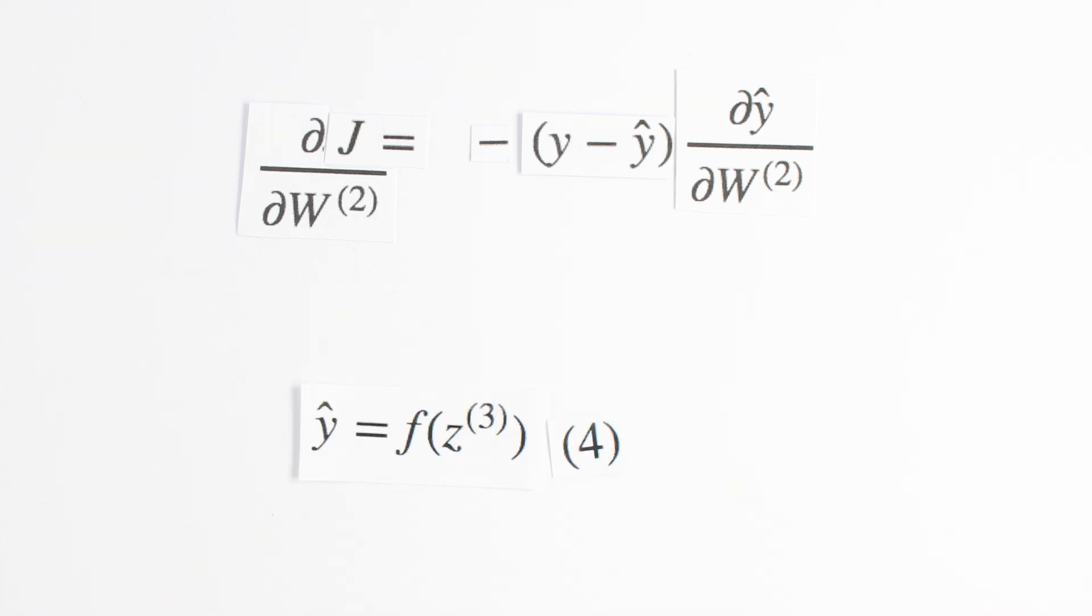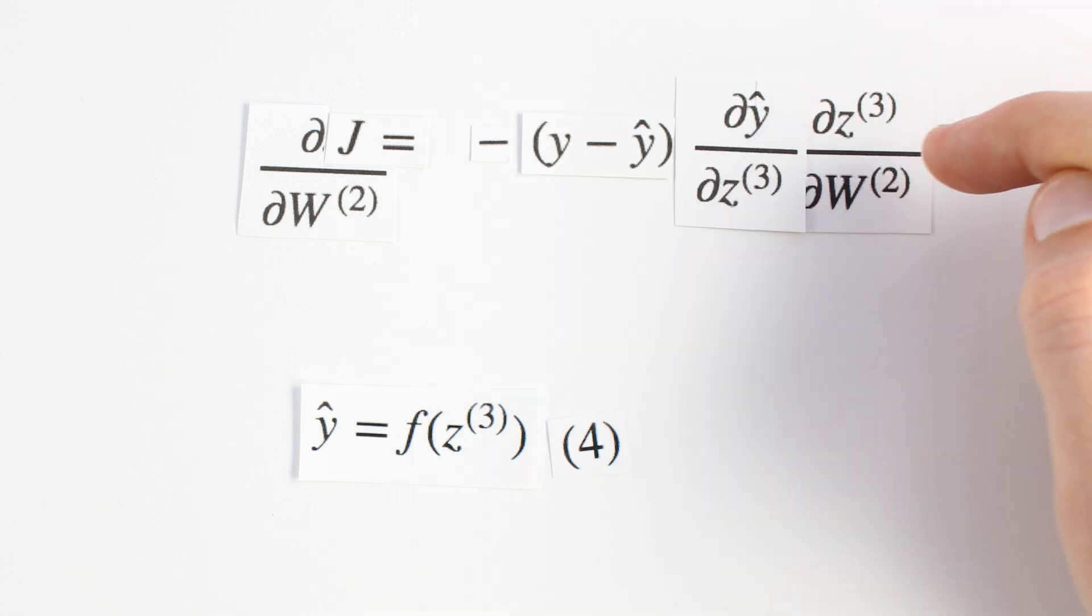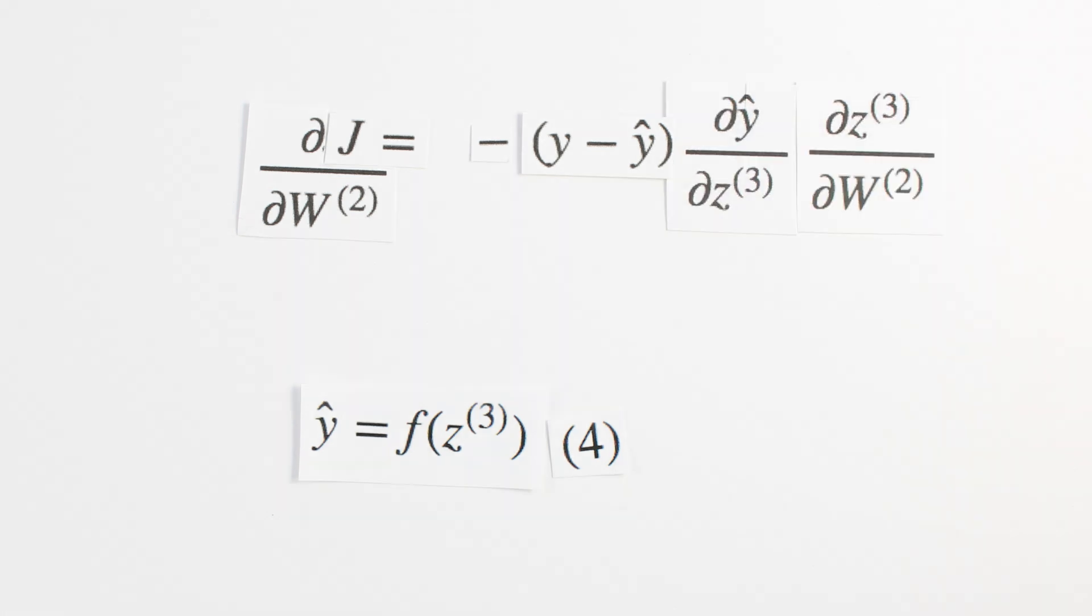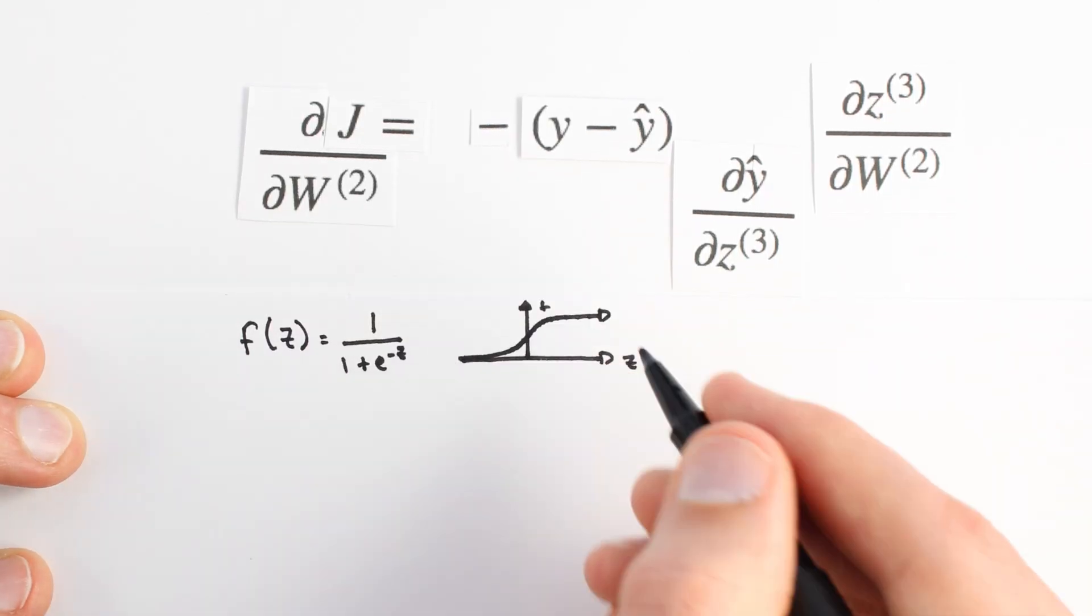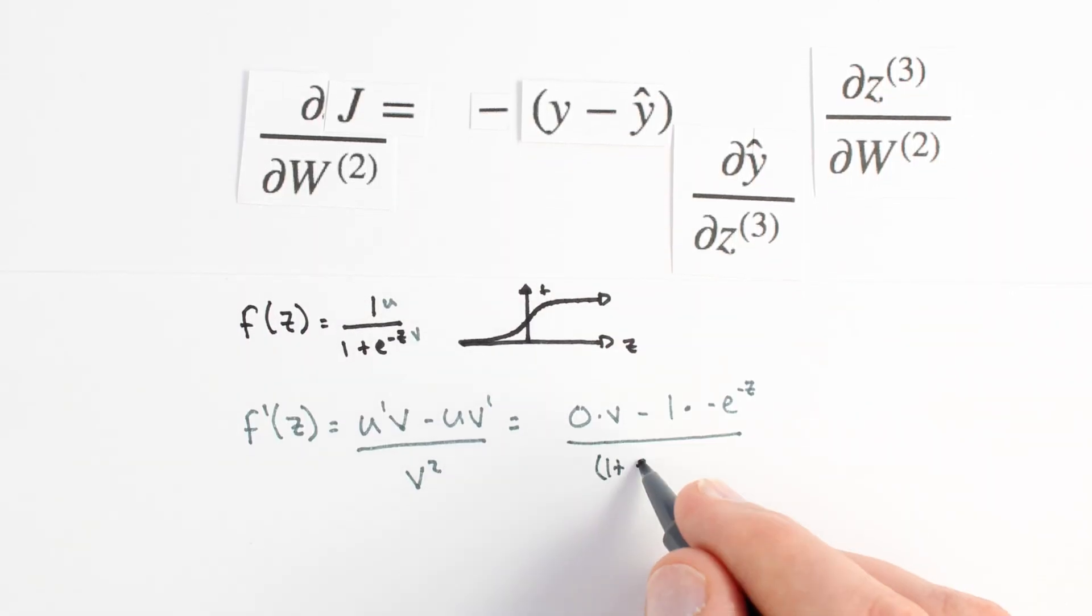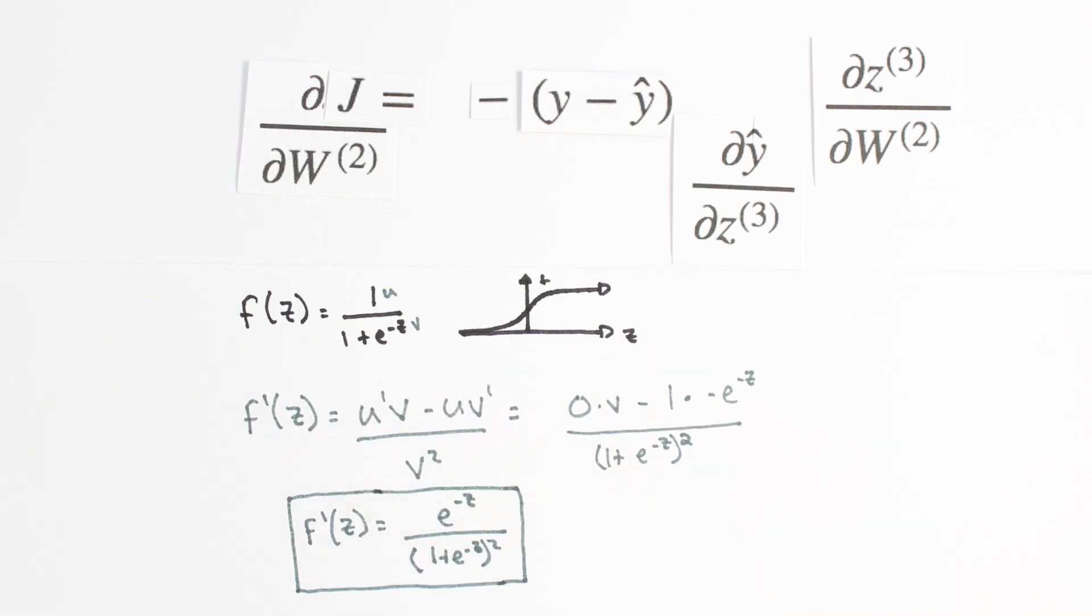Equation 4 tells us that y hat is our activation function of z3, so it will be helpful to apply the chain rule again to break dy hat dw2 into dy hat dz3 times dz3 dw2. To find the rate of change of y hat with respect to z3, we need to differentiate our sigmoid activation function with respect to z. Now is a good time to add a new Python method for our derivative of our sigmoid function, sigmoid prime.